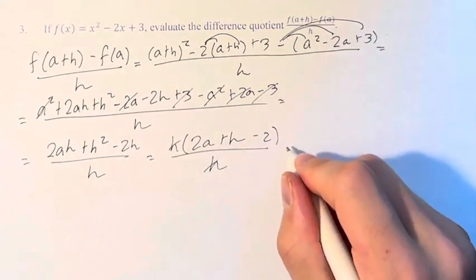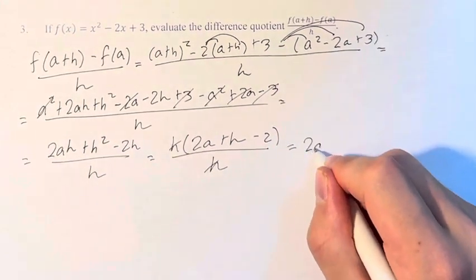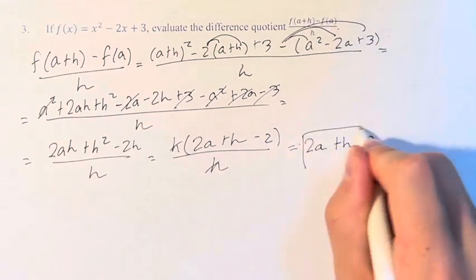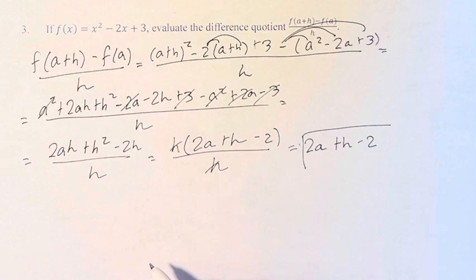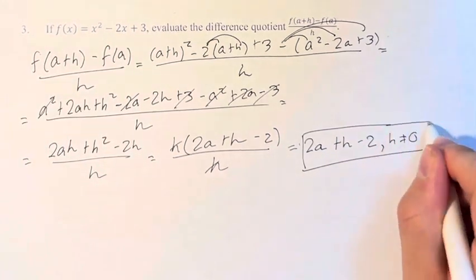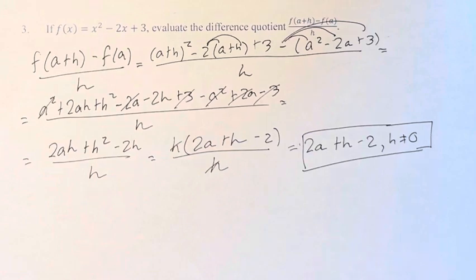These h's cancel, and we're left with 2a + h - 2 is the value of this difference quotient, given that h is not equal to 0. Thank you.